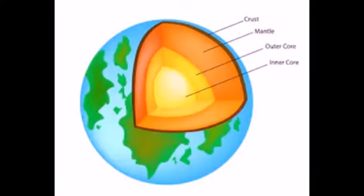The lower mantle is made up of oxygen, calcium, silicon, magnesium, and iron. The lower mantle extends to a depth of 2,870 kilometers. The temperature of the lower mantle ranges between 900 degrees Celsius to 4,000 degrees Celsius.